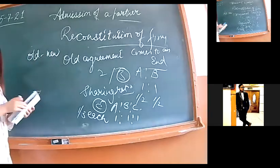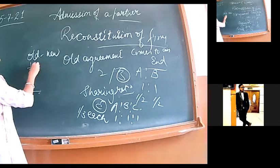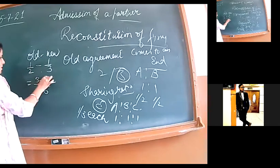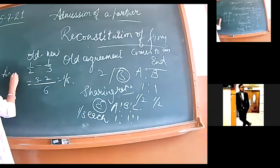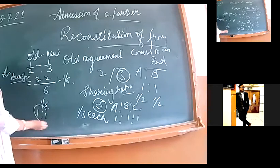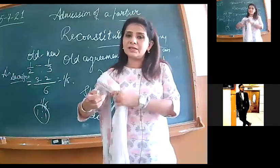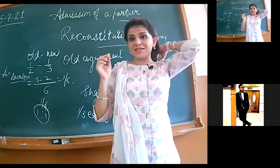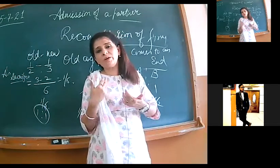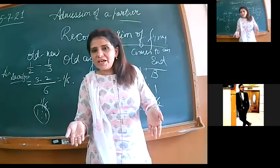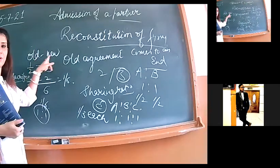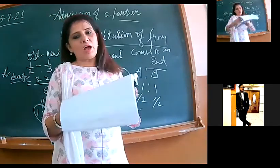Next paragraph. When new partner admits, obviously my old partners have to surrender something in favor of the new partner. So for that surrendering, we will be calculating sacrificing ratio at the time of admission. Why? Because earlier, the firm's profit was divided between two people, now with the third person coming, the same profit will be divided among three, so definitely my old partners' share will decrease compared to earlier. The difference between the two will be sacrificing ratio. So sacrificing ratio ka formula kar lijiye: old minus new.